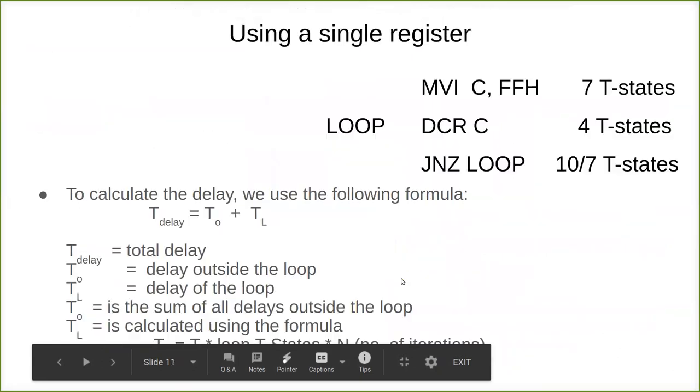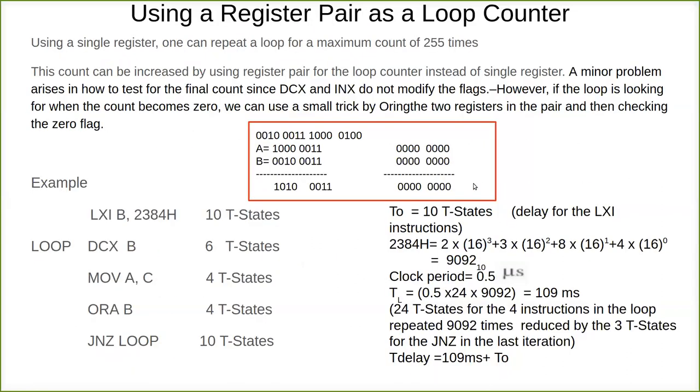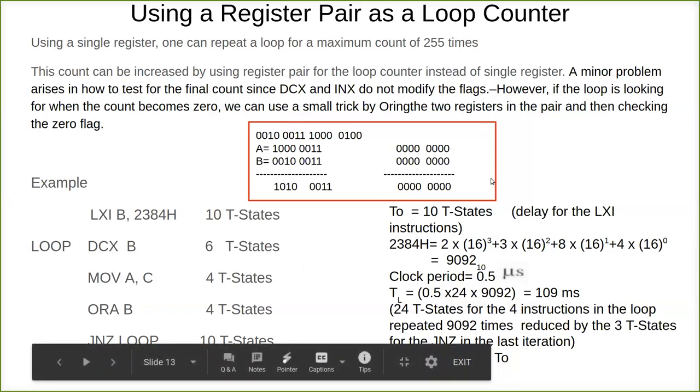Here we have to calculate all the instructions within the loop. Whereas in the previous one, what we have done, only one instruction is there. But here it is not that. Here we have two more instructions inside. So that also has to be considered.